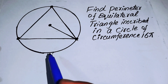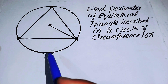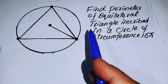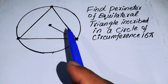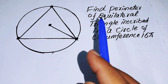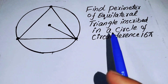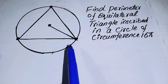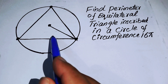Hello everyone, welcome back to the Map of Mathematics. In this video we are going to solve this nice math algebraic challenge. The question asks us to find the perimeter of an equilateral triangle inscribed in a circle of circumference 16π.